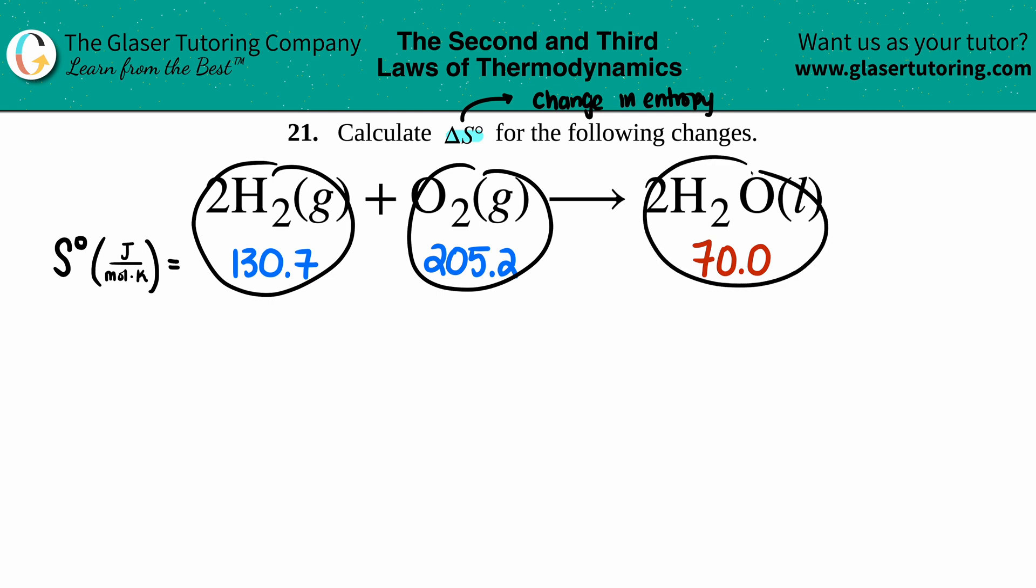H₂ has an S value of 130.7, O₂ has an S value of 205.2, and H₂O has an entropy S value of 70.